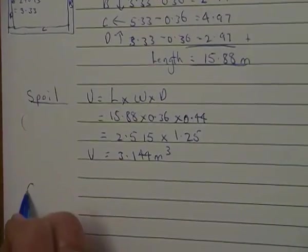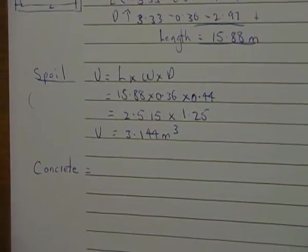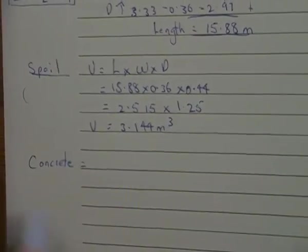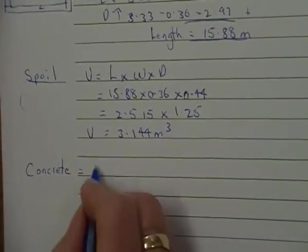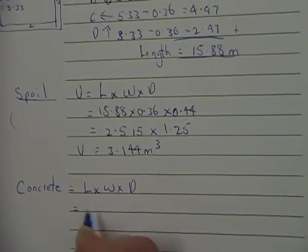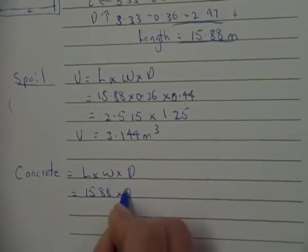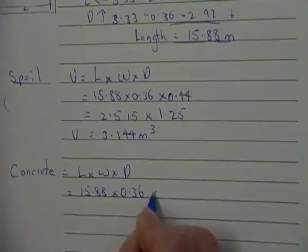Now, when we want to do our concrete, we've got most of the figures. We've just got to change the depth. So, we're going to do exactly the same thing. It's 15.88 times the width of the footing, 0.36.